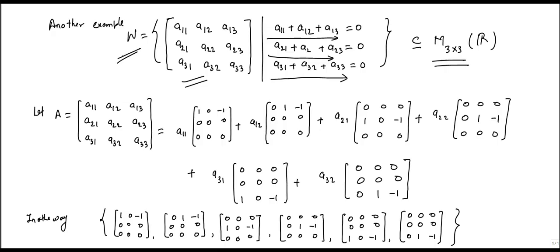Now, we want to find its basis. So first, let us see its condition. The condition is that a11 + a12 + a13, entries in the first row, all sum up to 0.